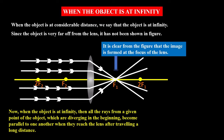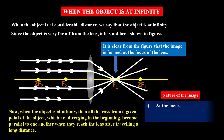Now let us see the nature of the image. The image is formed at the focus. It is real and inverted, and it is much smaller than the object — that is, it is a diminished image.